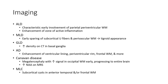Imaging characteristics: ALD — characteristic early involvement of periventricular white matter with enhancement at the zone of active inflammation. MLD — early sparing of subcortical U-fibers and perivascular white matter tigroid pattern apparent. GLD — increased density on CT in the thalami. Alexander disease — enhancement of periventricular lining and periventricular rim, frontal U-fibers, and more.